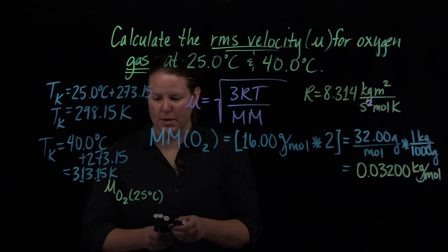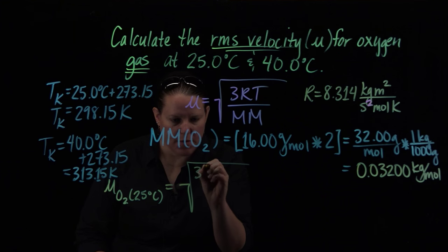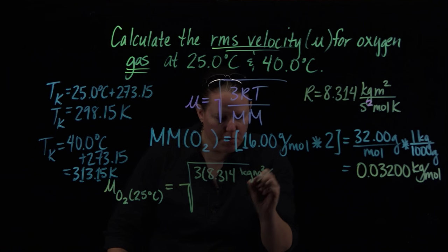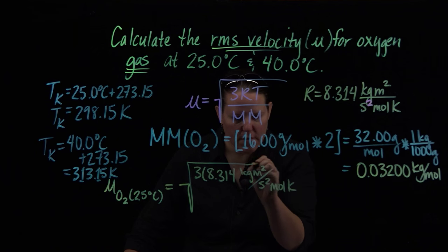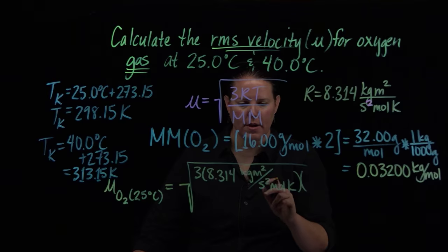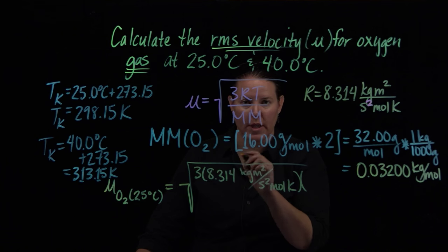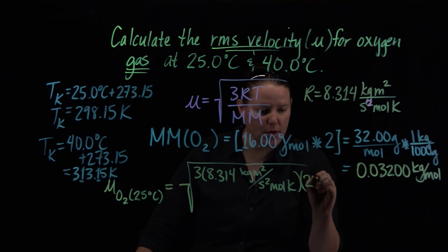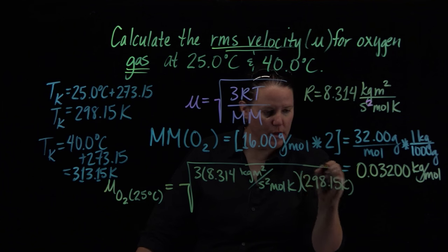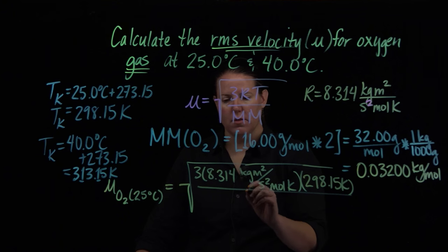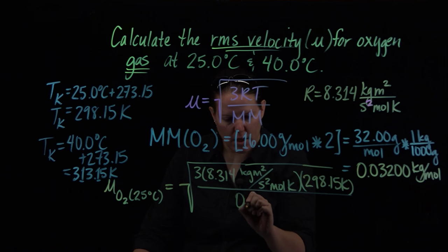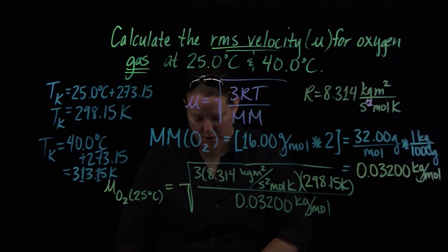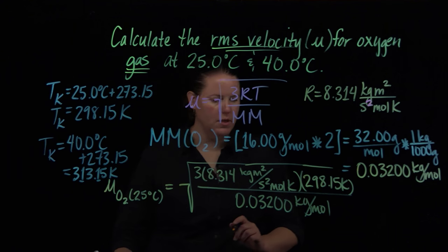So when we get to where we're actually plugging it in, here's the square root of 3 times 8.314 kg·m²/s²·mol·K. Remember this is the derived unit in substitution for joules. Then we're going to do 25°C which is 298.15 K, divided by the molar mass of O2 in kilograms. Love it.